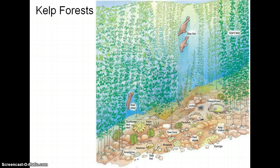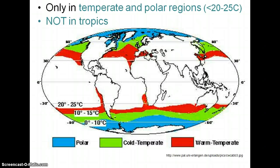In the temperate regions, in a hard-bottom community, you will find a kelp forest. Kelp forests are found only in temperate and polar regions — they need the water to be less than 20 to 25 degrees Celsius. Remember when we talked about coral reefs, we said they have to be warmer than 20 degrees Celsius, so coral reefs are only found in the tropics. Kelp need to be less than 20 to 25 degrees Celsius, so they are not found in the tropics. The colored areas on the map show where you would find a kelp forest worldwide.